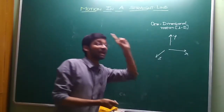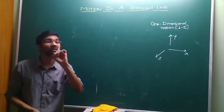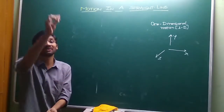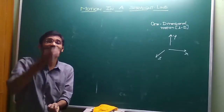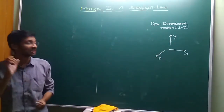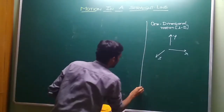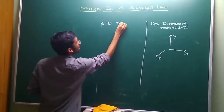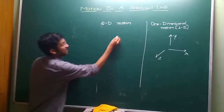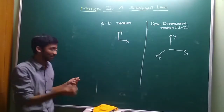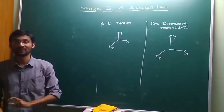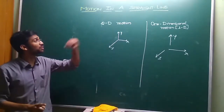For one-dimensional motion, we take only one axis. For example, if you throw a ball straight up, it goes up and comes back — that is motion along the y-axis only (up and down). We do not need the z-axis or x-axis. For two-dimensional motion, we use a pair of axes — for example, x and y, or y and z, or z and x.